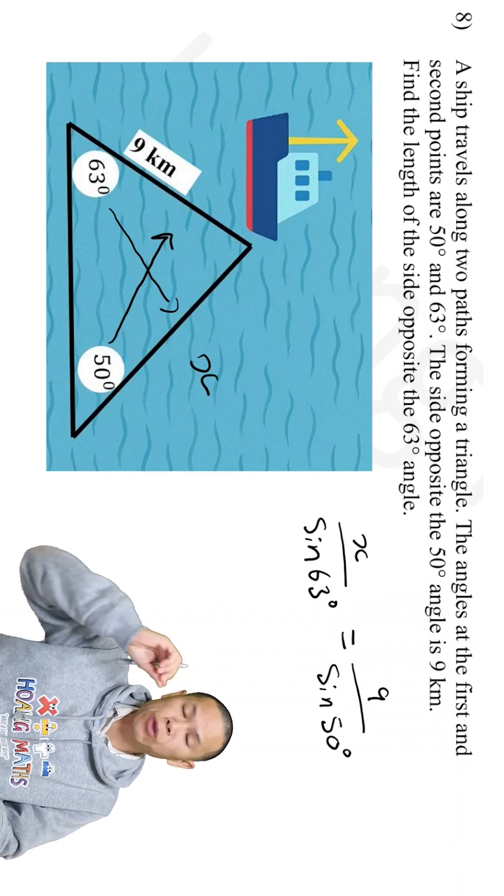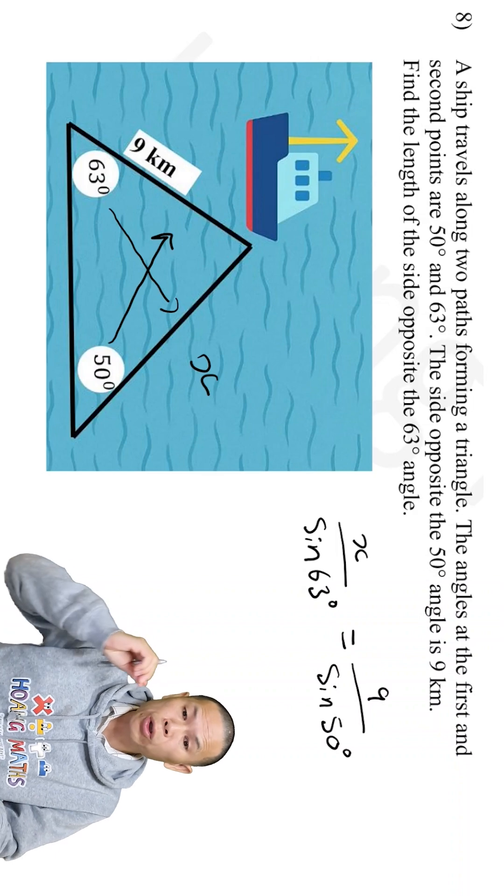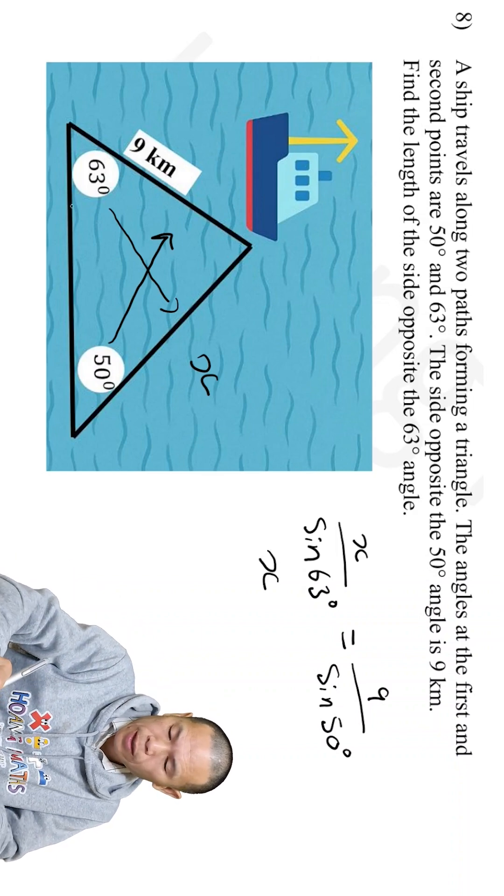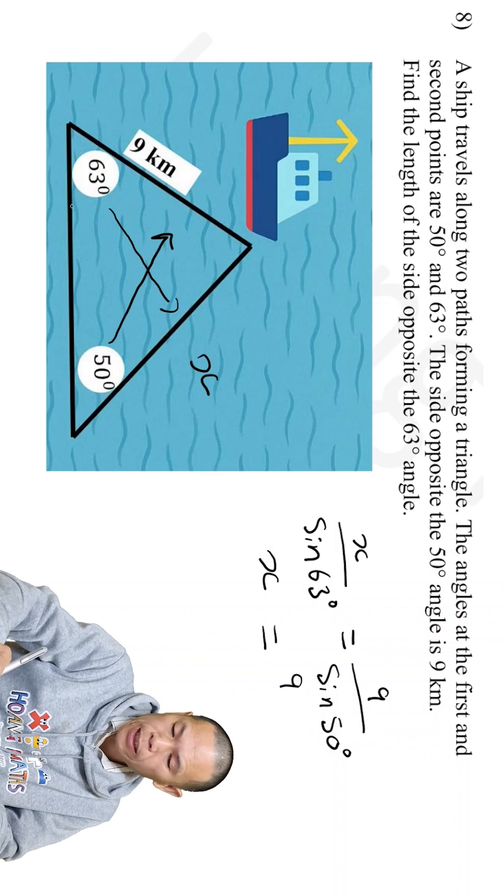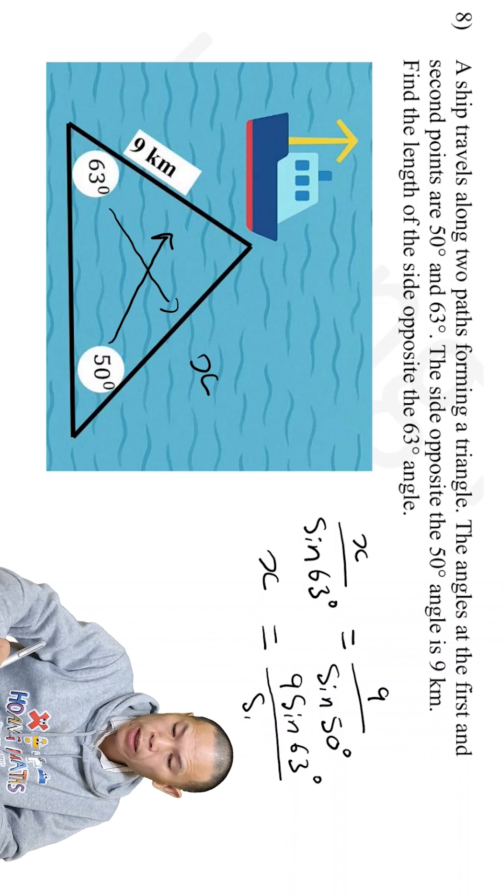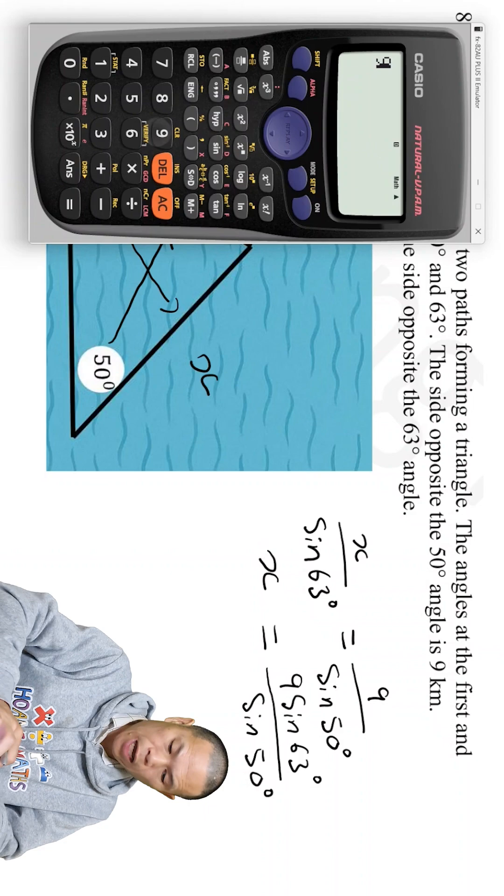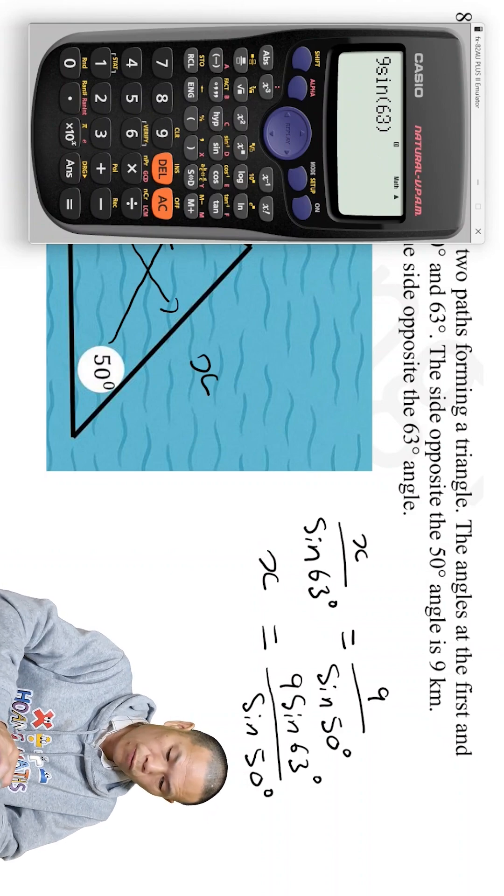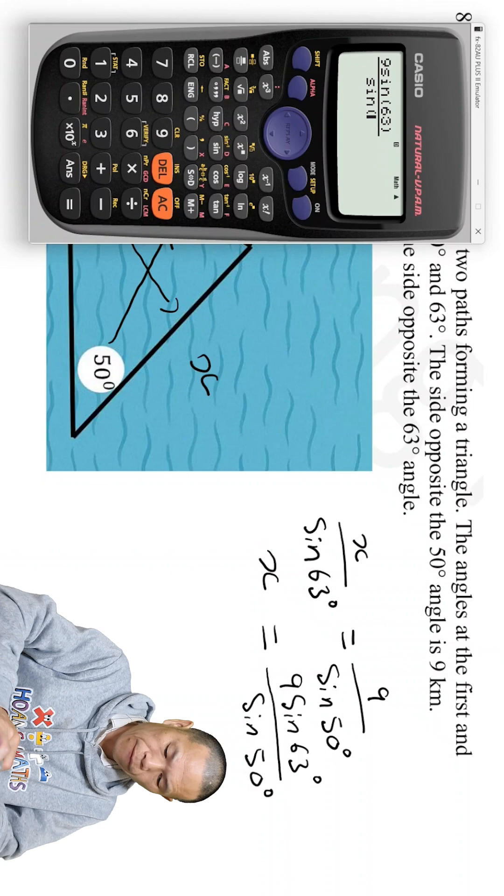I multiply sine of 63 degrees on both sides. So that will give me X equals 9 sine 63 degrees over sine 50 degrees. So I just go 9 sine 63 over sine 50.